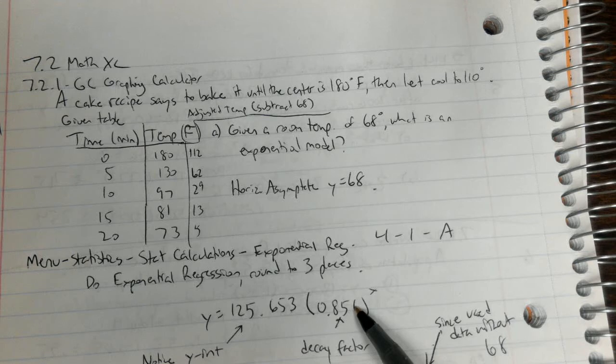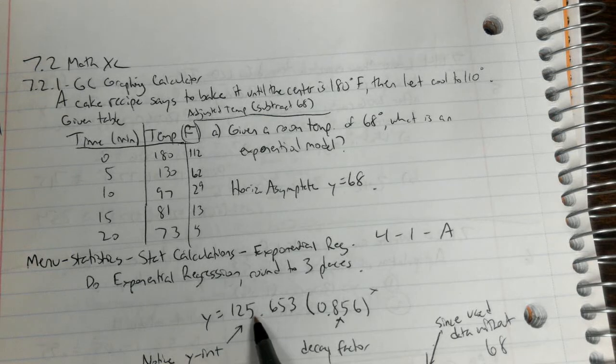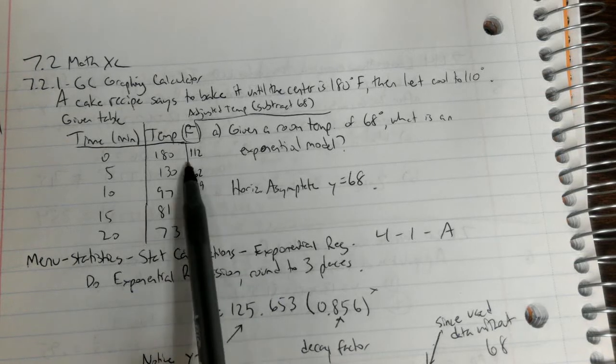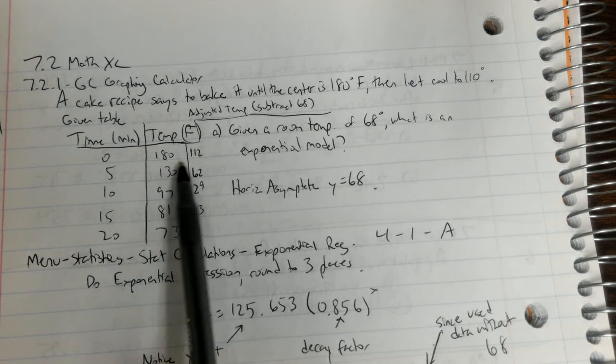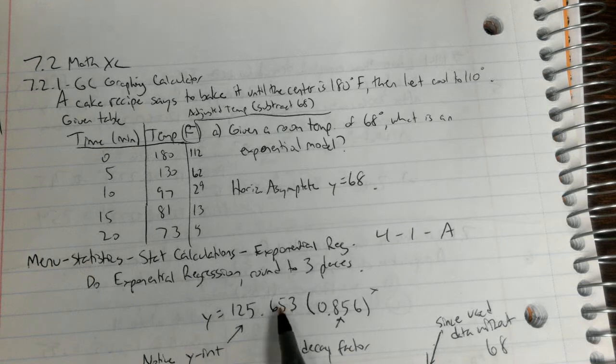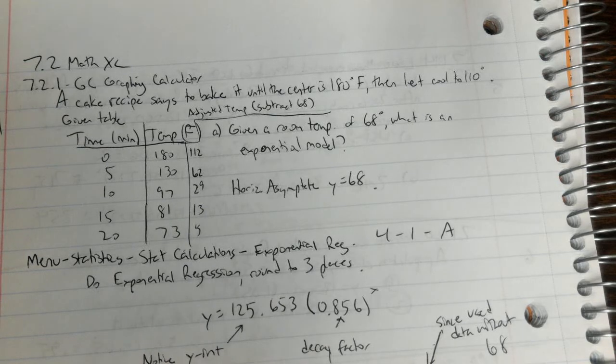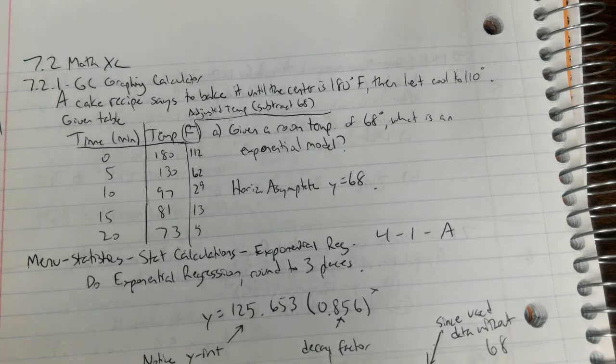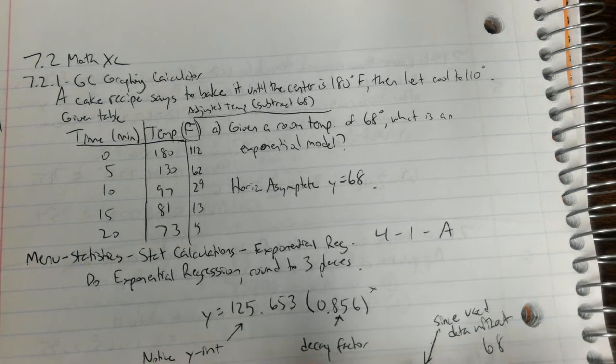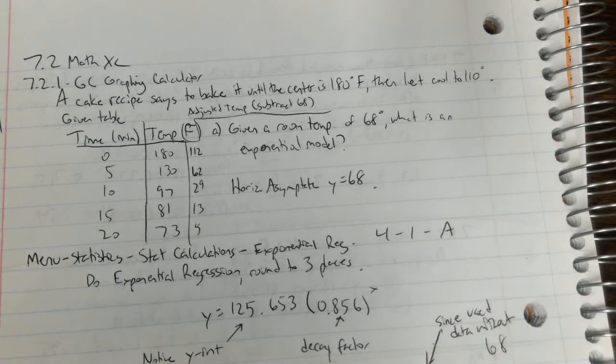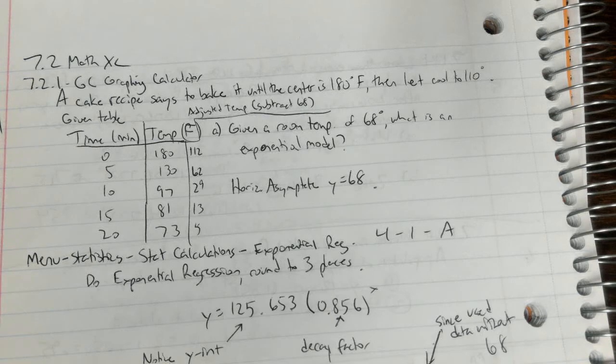When you notice about this one, this is not your y-intercept, it's not the 112, it's not the 180, so it's like something's wrong. All you do is adjust for your 68 degrees. You take the exact same equation and then put plus 68, or if you have 70 degrees you put plus 70. That's because we use data without 68 to do our regression.